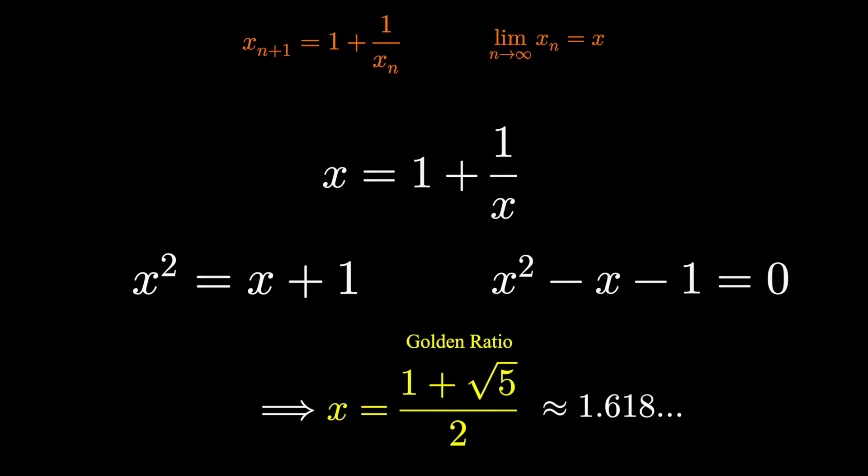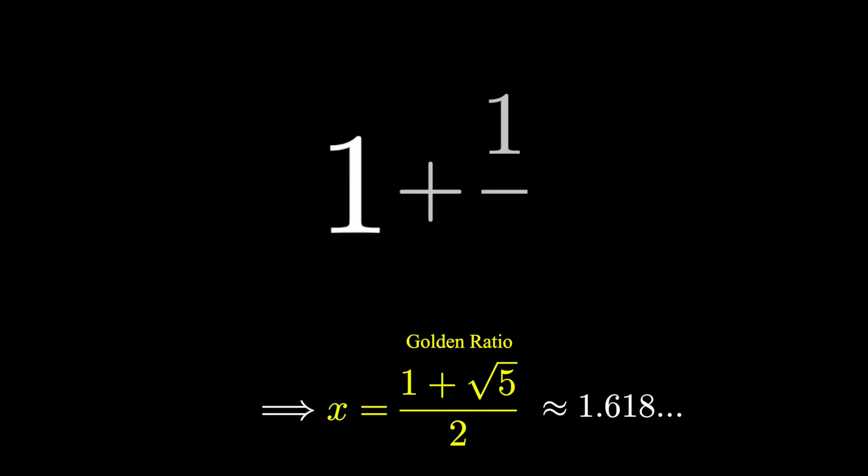And so, we've solved for what this continued fraction could be. It's a very nice representation for phi, the golden ratio.